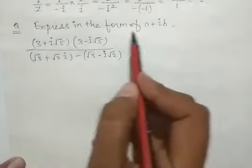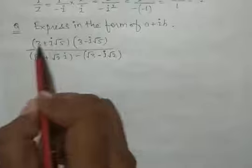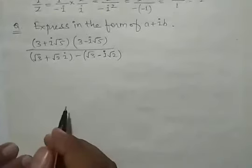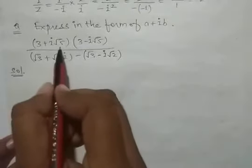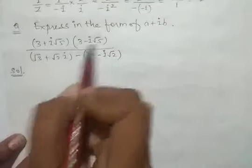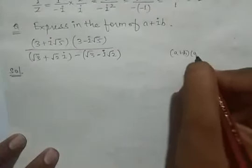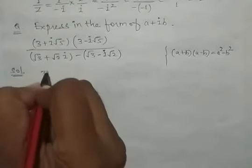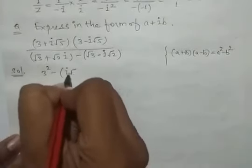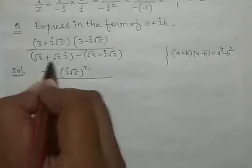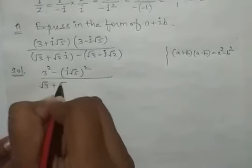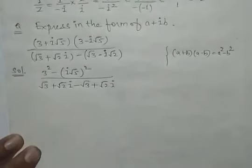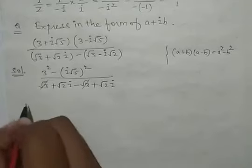Now the next question asks us to express an expression in the form of a plus iota b. We have to simplify it into the complex number form. At the first step we apply the identity a plus b into a minus b is equal to a square minus b square. So the numerator becomes 3 squared minus (iota root 5) squared upon the denominator with terms root 3 plus root 2 iota and minus root 3 plus root 2 iota.